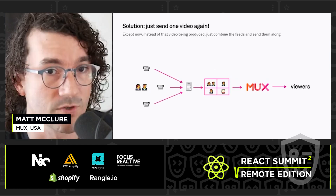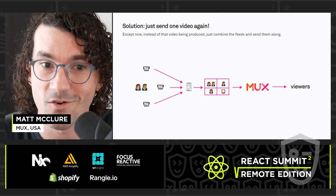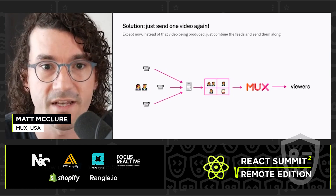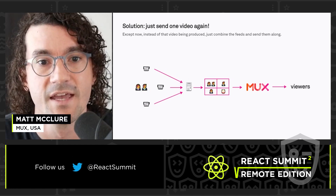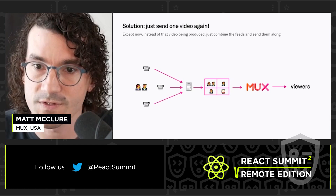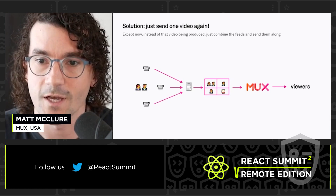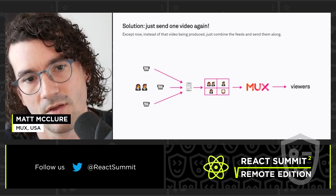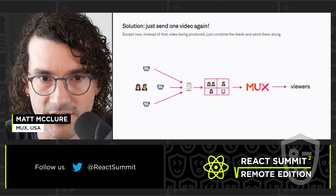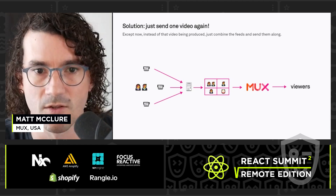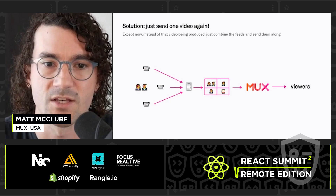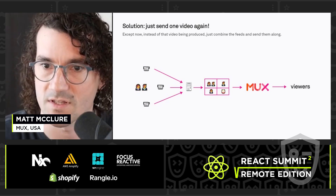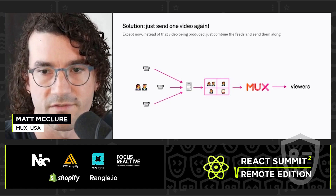So one solution would just be to send one video again — like you were doing before, but instead of that video being produced, you just combine all the feeds at that level and then send them along. So in this example, all the cameras go into that one encoder box locally. It just lays them out in four quadrants,